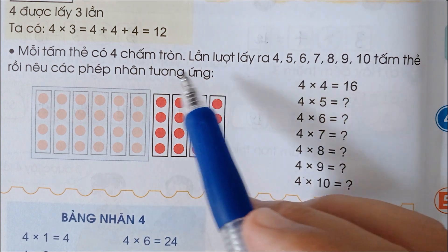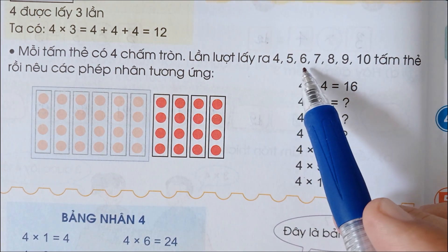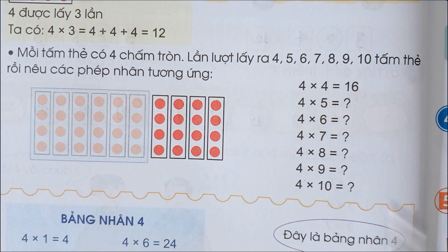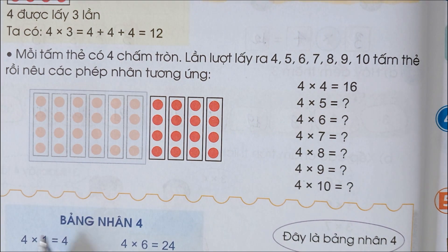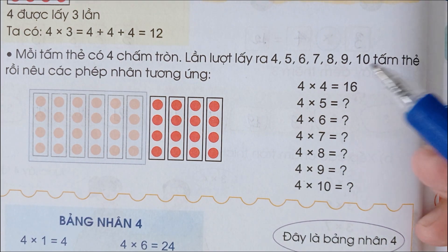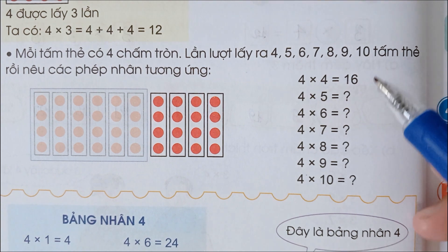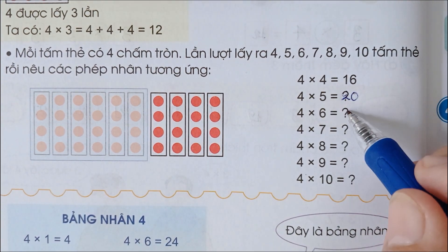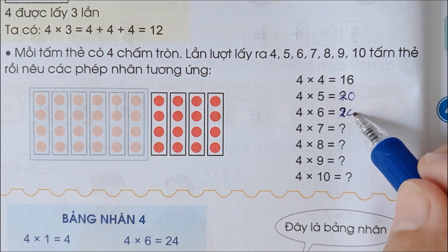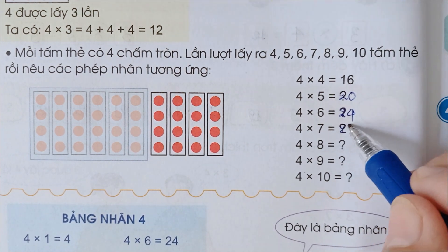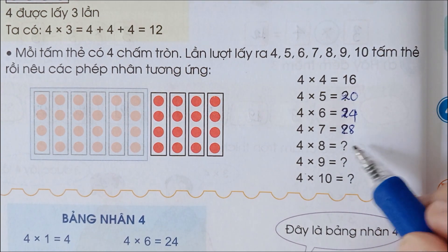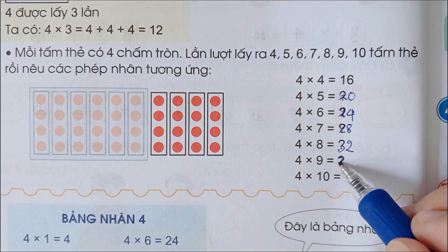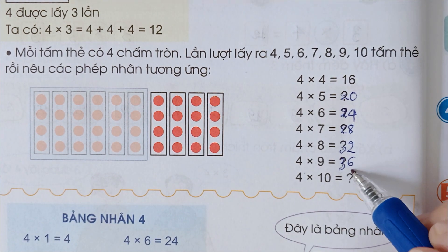Mỗi tấm thẻ có 4 chấm tròn, lần lượt lấy ra 4, 5, 6, 7, 8, 9, 10 tấm thẻ rồi nêu các phép nhân tương ứng: 4 x 4 bằng 16, 4 x 5 bằng 20, 4 x 6 bằng 24, 4 x 7 bằng 28, 4 x 8 bằng 32, 4 x 9 bằng 36, 4 x 10 bằng 40.